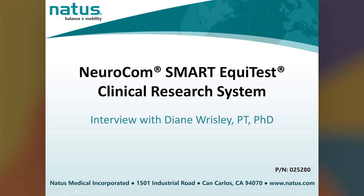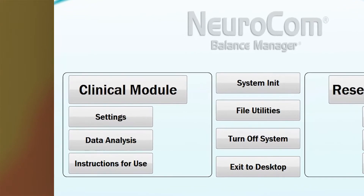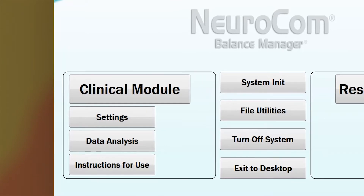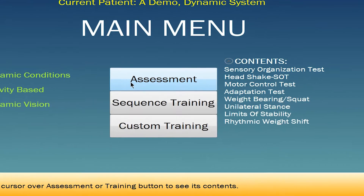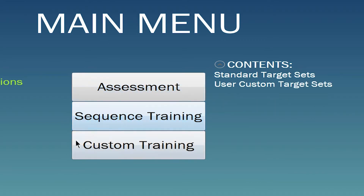The Neurocom SmartEquitest clinical research system, often referred to as the CRS, can be used for both clinical and research purposes. Let's take a look at the clinical module in the software and review the standardized clinical assessment tests that can be used to compare to normative data. Here is a quick glimpse of all the different assessment tests to select from. The SmartEquitest CRS also includes sequence and custom training for a wide variety of treatment options.